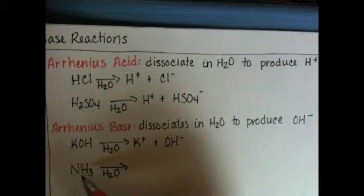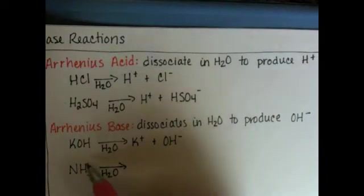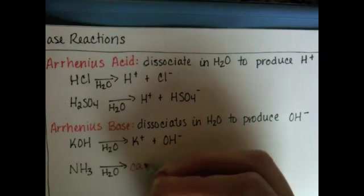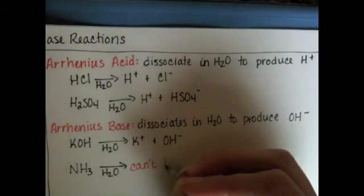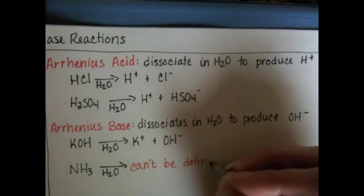And because you can't dissociate the ammonia ion, the ammonium molecule, ammonia molecule, because it cannot be dissociated, because it is not made of cations and anions, it can't be defined under the Arrhenius method as a base.